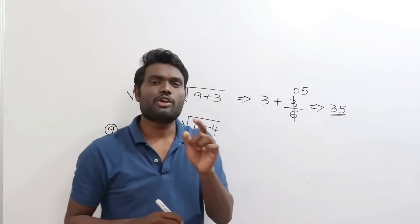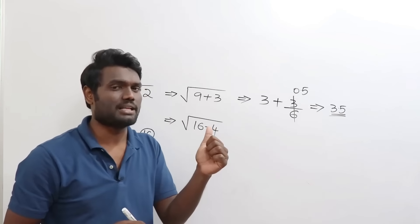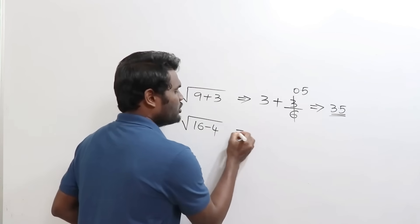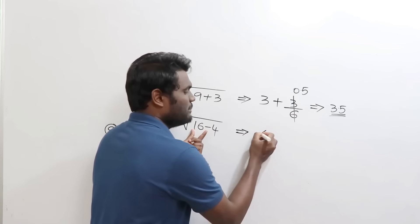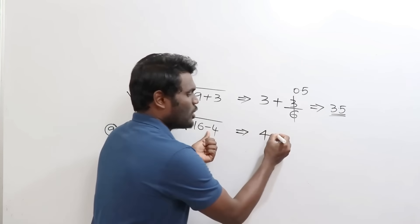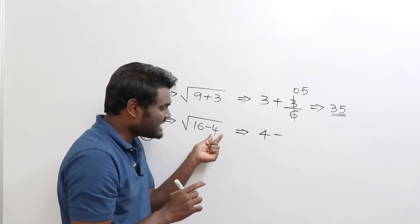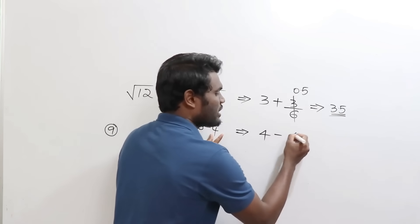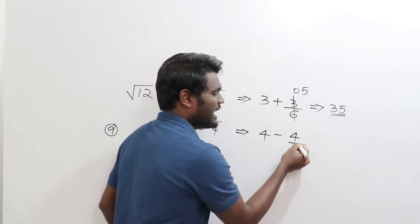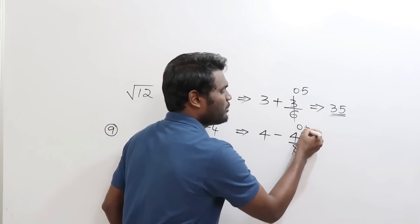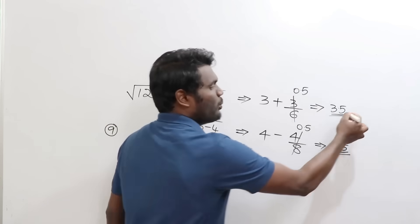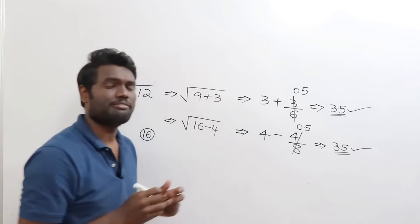You can verify this with a calculator and you'll get the same answer. Now calculating using 16 is equally simple. Square root of 16 is 4, so write 4. As it is minus, write minus. It is 4 less, so write 4 divided by double of 4, which is 8. 4 divided by 8 gives 0.5, so the value is 3.5.